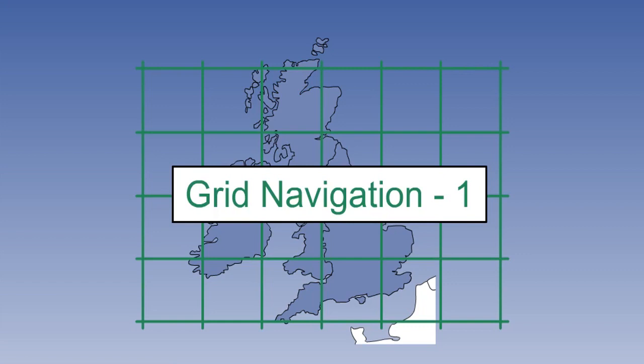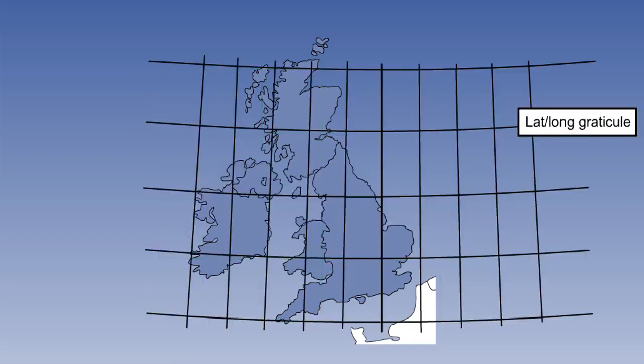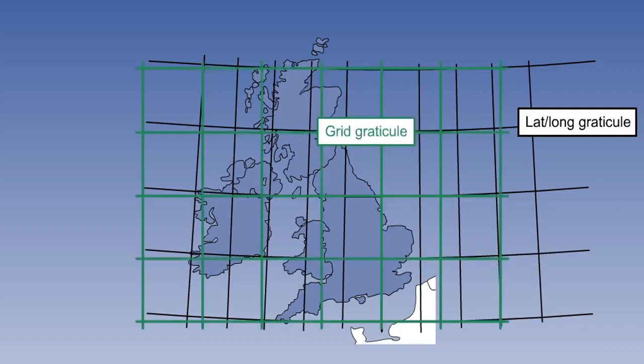The later ones will look at steering when using grid and the solution of grid problems. Grid navigation is a technique in which, rather than using the normal latitude and longitude graticule as a reference for direction and positions, we apply a square-shaped grid and use that instead.